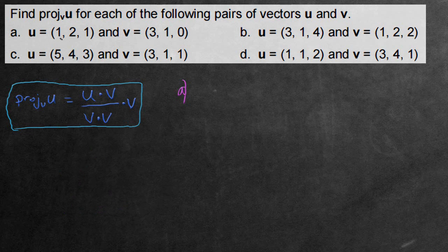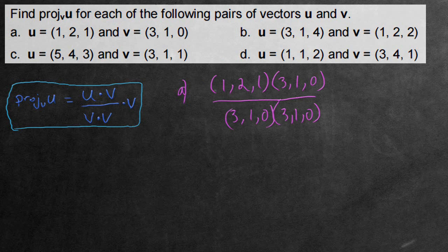The first vector we're dealing with here is u, which is (1, 2, 1). So let's go ahead and put that into the formula here. So we have (1, 2, 1) and it's being multiplied by v. And v is (3, 1, 0) for question a. And it's being divided by v times v, so v times itself. So (3, 1, 0). At the end here, it's being multiplied by another v, the v vector. So on the outside, (3, 1, 0).